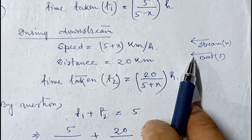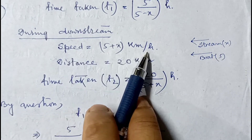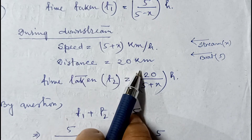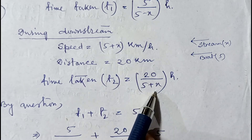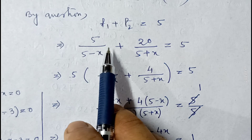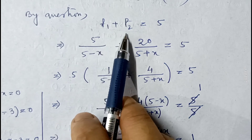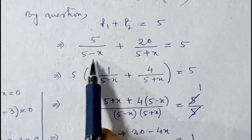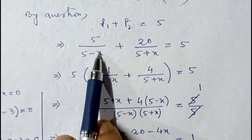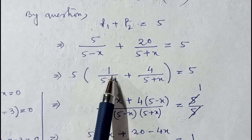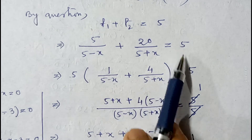The distance downstream is 20 kilometer, so time taken t2 will be 20 divided by (5 plus x) hours. As given, total time for upstream and downstream is 5 hours, so t1 plus t2 equals 5: that is 15/(5 minus x) plus 20/(5 plus x) equals 5. Taking 5 common from the numerator, we are left with 1/(5 minus x) plus 4/(5 plus x) equals 1.